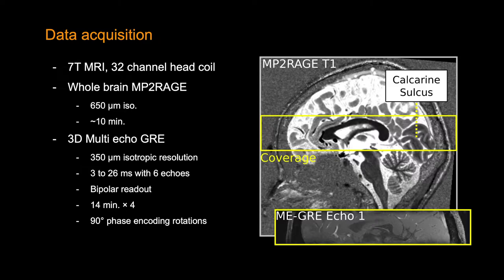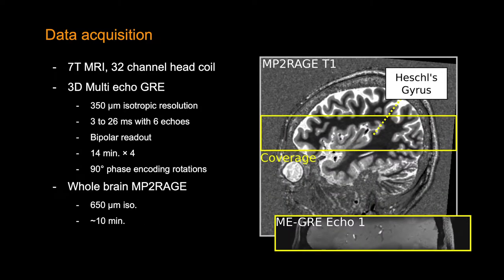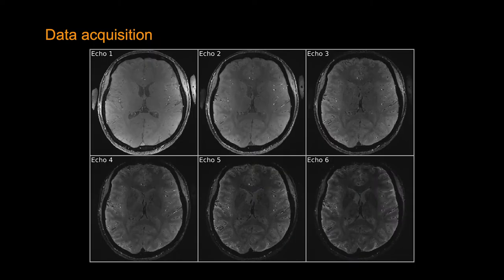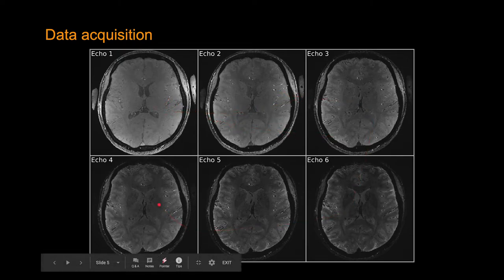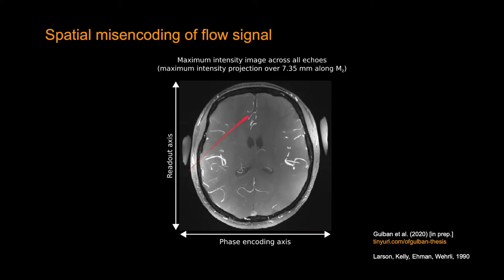Across these runs, we did 90 degree phase encoding rotations. We had two regions of interest when acquiring this data: one was the calcarine sulcus and the other one was Heschel's gyrus. You can see our 6 echoes in this image, and you can notice that there are tiny white spots in all of these echoes. Once we do maximum intensity projection across all echoes and across the Z direction for 7 mm, you can realize that these bright voxels indicate the arteries.